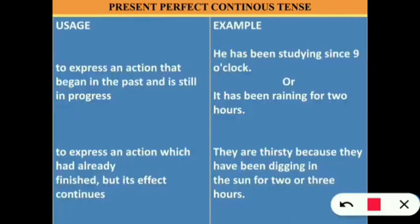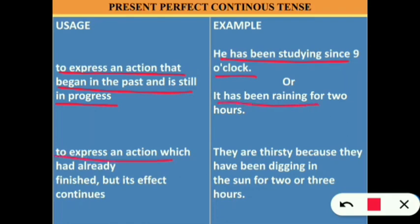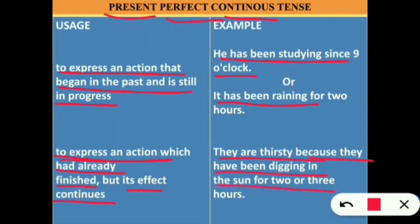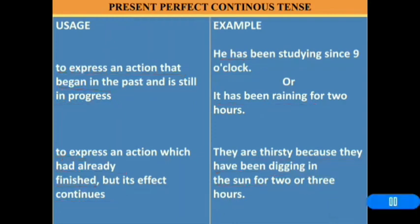Uses of present perfect continuous tense: to express an action that began in the past and is still in progress — 'He has been studying since nine o'clock,' 'It has been raining for two hours'; and to express an action which had already finished but its effect continues in the present — 'They are thirsty because they have been digging in the sun for two or three hours.'